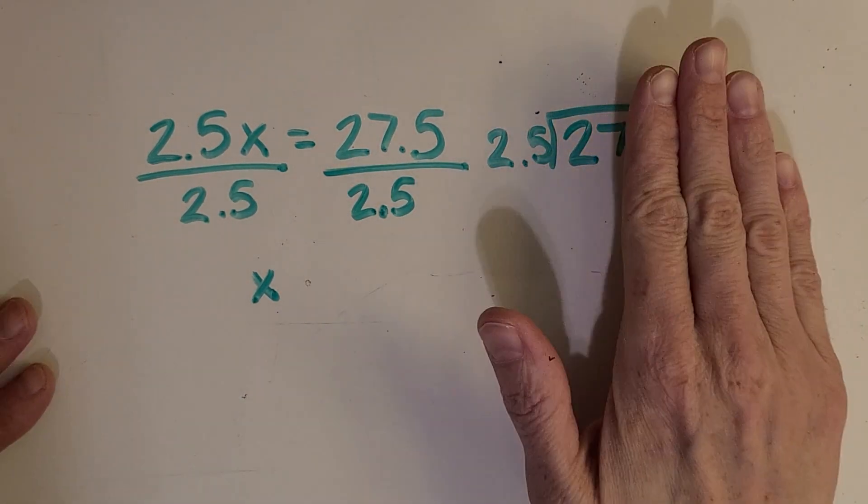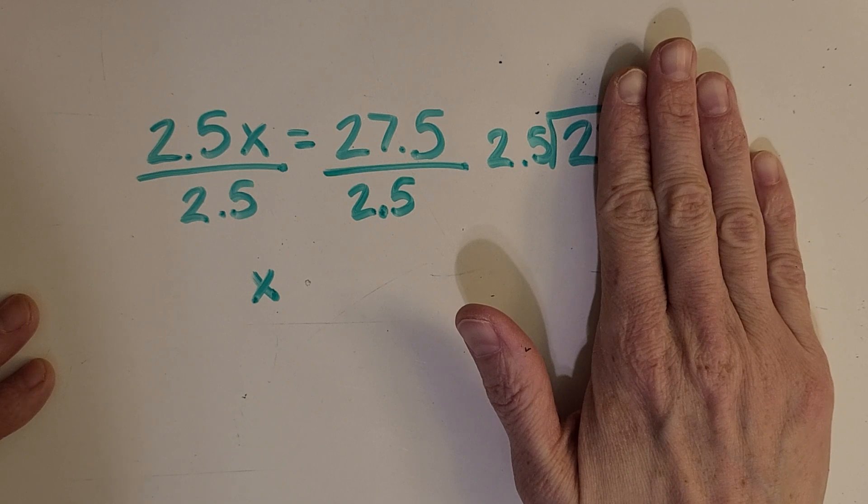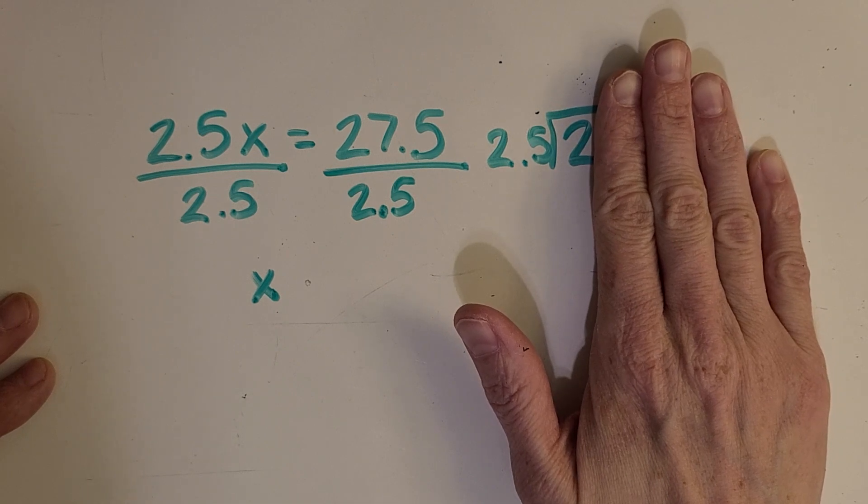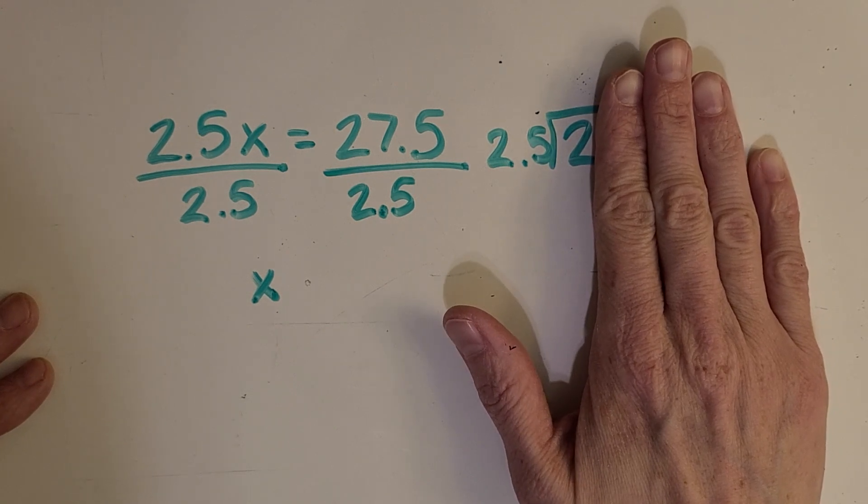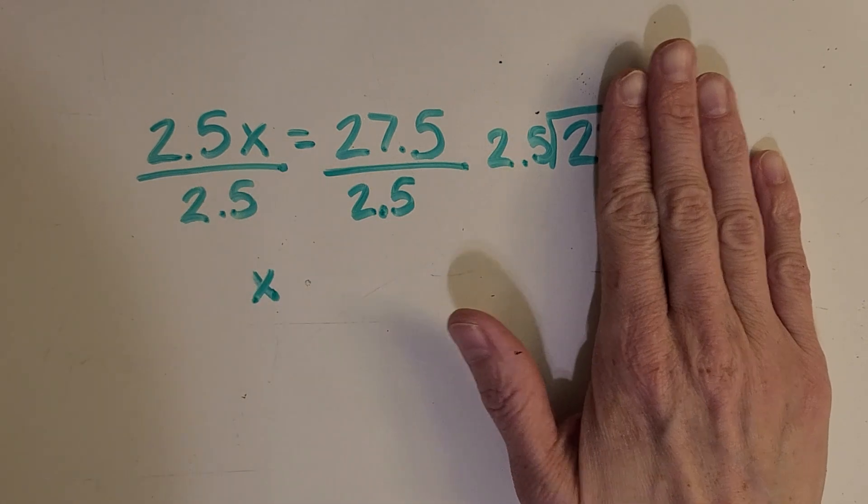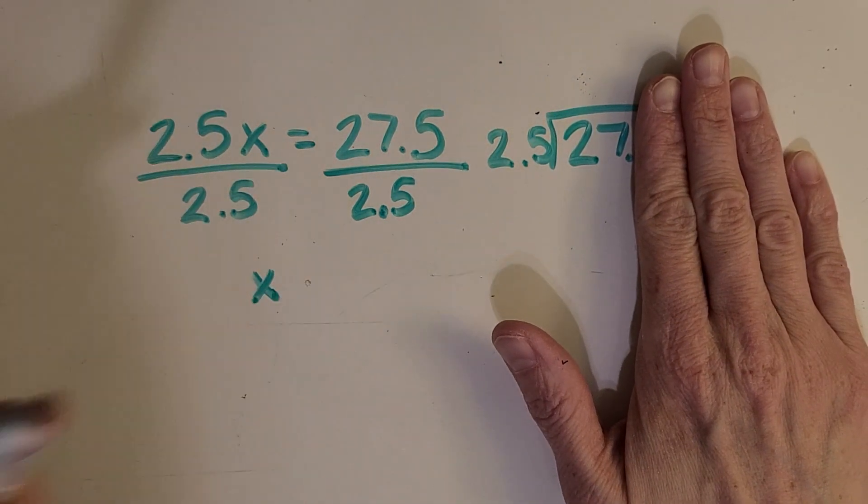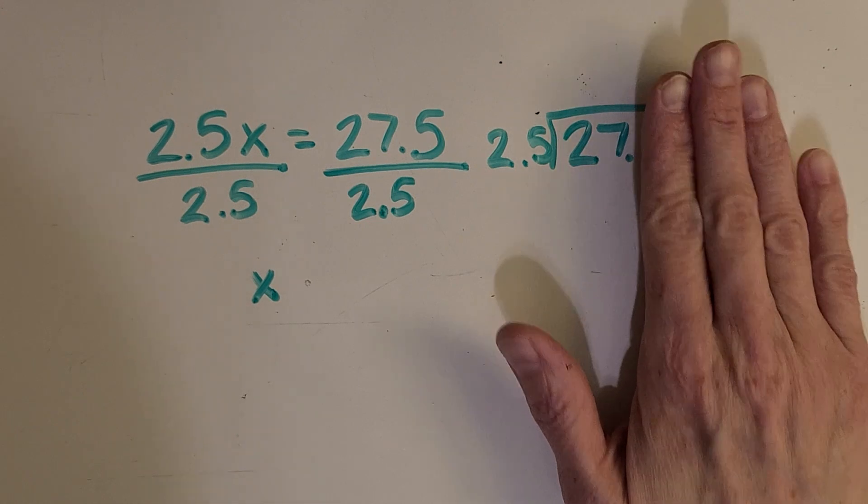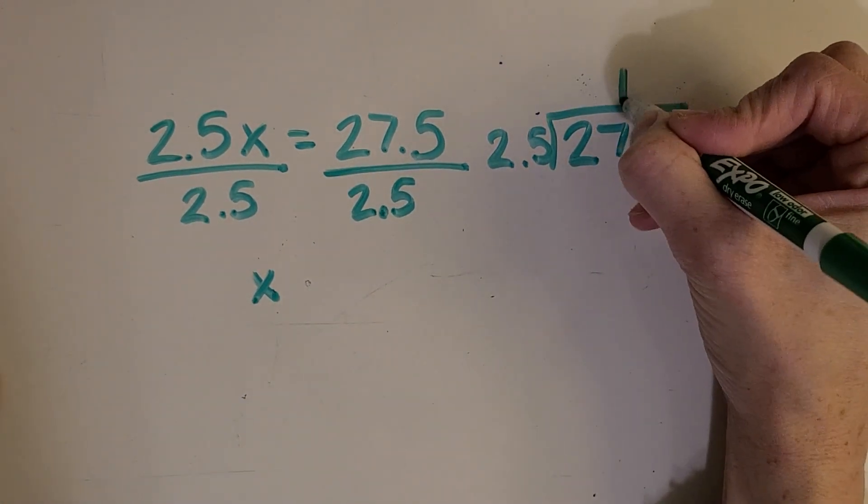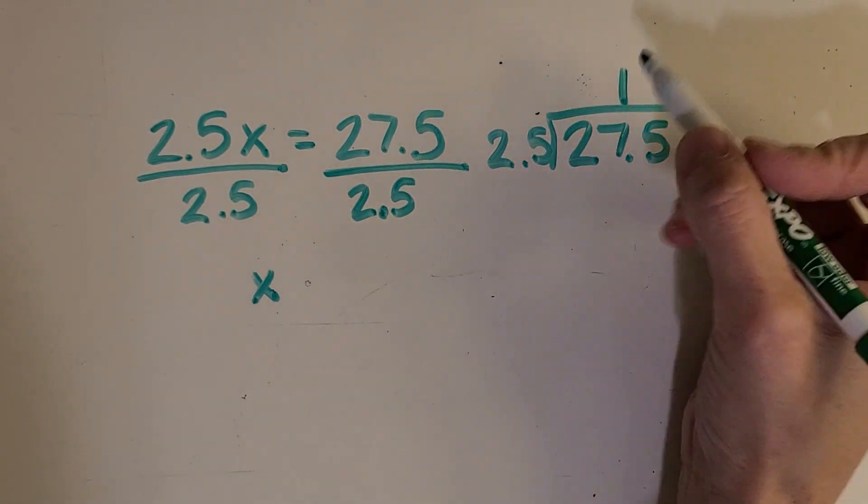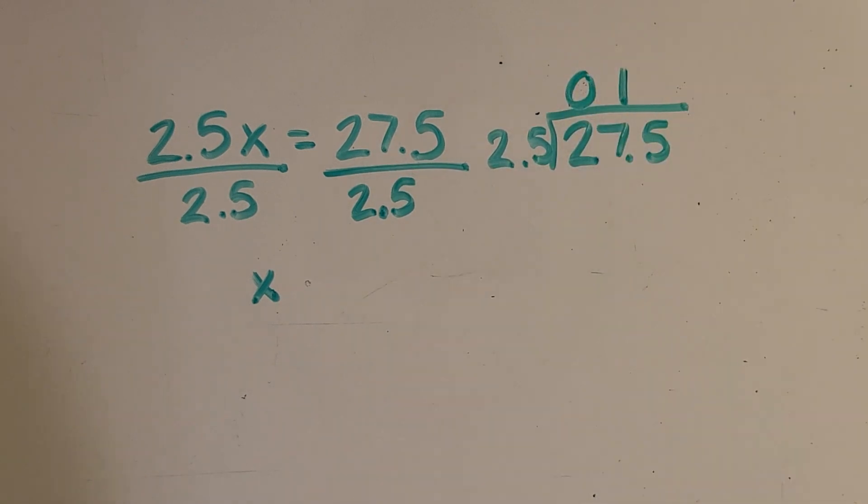I always cover things up when I do long division, and so the 2, I don't have enough to make a group of 25. So I'm going to scoot over, and 27 is big enough, and I can make one group. I'm going to put a 1 right there. And I could put a 0 here as a placeholder. That can kind of help sometimes if you tend to get mixed up on your digits.